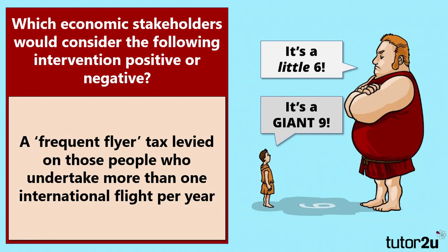Finally, here's a thinking task revisiting something from online lesson one: the impact of intervention on different stakeholders. In this case, we've suggested a frequent flyer tax on people who take more than one international flight a year. Think about which economic stakeholders might consider that intervention positive and which might regard it as negative. You can also go back through the other examples in this video and carry out the same stakeholder analysis for a further challenge to extend your learning.